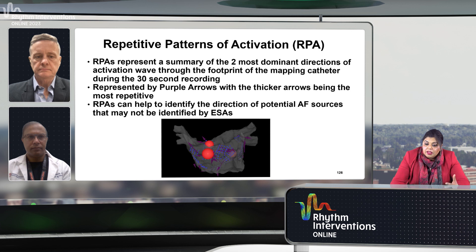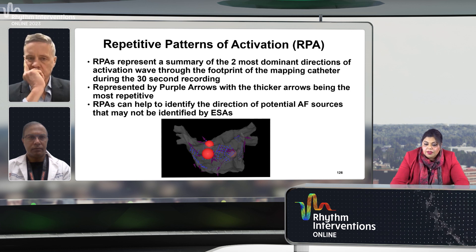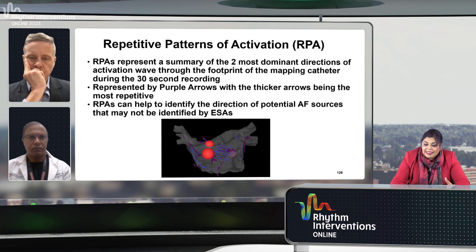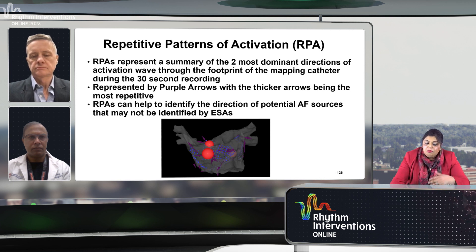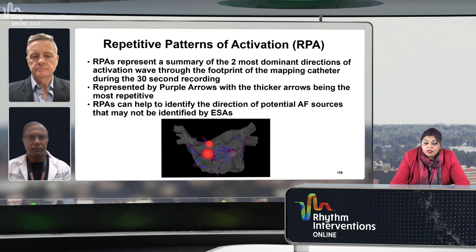Repetitive patterns of activation represent a summary of the two most dominant directions of activation wave through the footprint of the mapping catheter during that 30-second recording. These are represented by purple arrows — the thicker the arrow, the more repetitive it is. These patterns help identify the direction of potential AF sources that we might not pick up with just the early sites of activation alone.